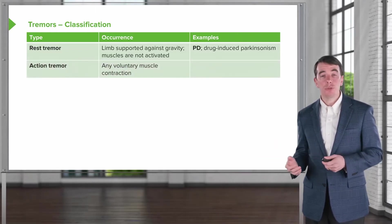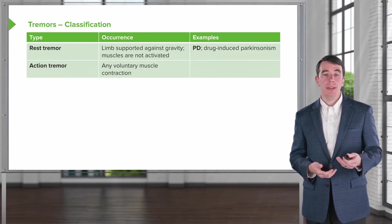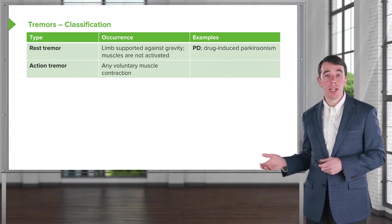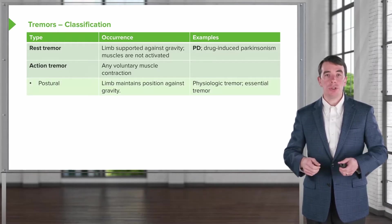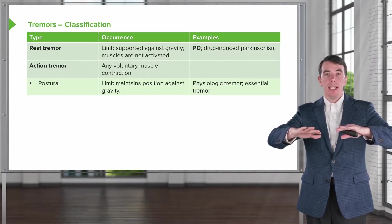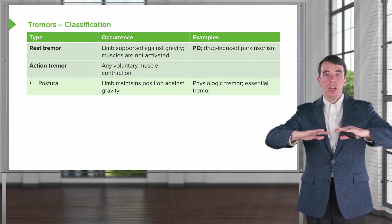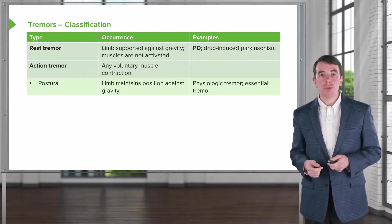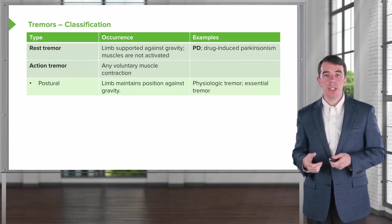The second type is an action tremor — tremor occurring with any voluntary muscle contraction. There are several subtypes. The first is postural tremor, which occurs when the limbs are maintained in a position against gravity. We often test this by having the patient hold their arms outstretched in front of them. Types of postural tremor include physiologic tremor and benign essential tremor.